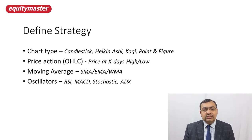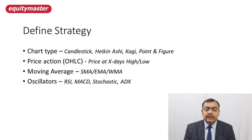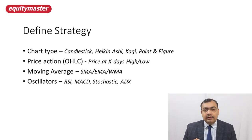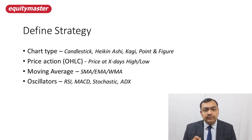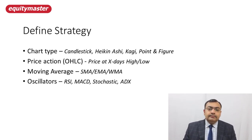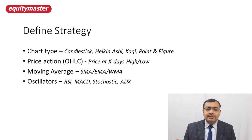Third is moving averages. This is generally a well-known swing trading indicator — the moving average which most people use. You can choose various moving averages. I generally choose short-term averages. In the next video, I'll be sharing a couple of strategies for stock selection purely from the swing trading point of view. Coming to moving averages, you have SMA — simple moving average — and EMA — exponential moving average.